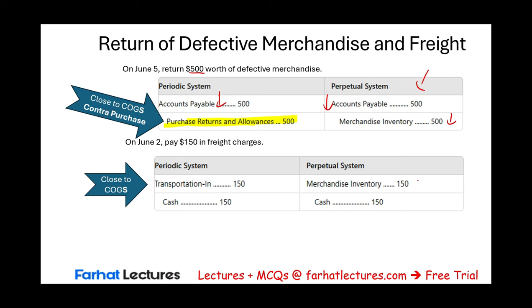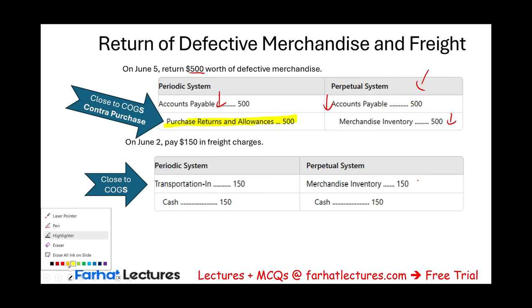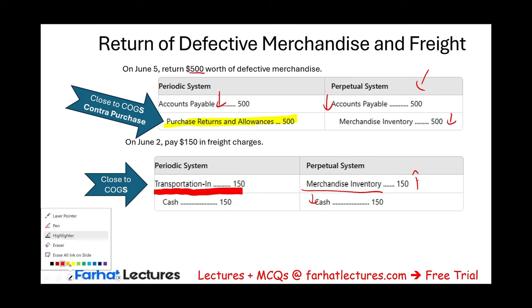On June 2nd, we paid $150 for freight. Under a perpetual system, when we pay for freight in, we increase our inventory and reduce cash — debit inventory, credit cash. Under a periodic system, we keep track of freight separately in an account called Transportation In. Transportation In is a cost of goods sold account. As you pay more transportation, your cost for that period goes up, and we credit cash.